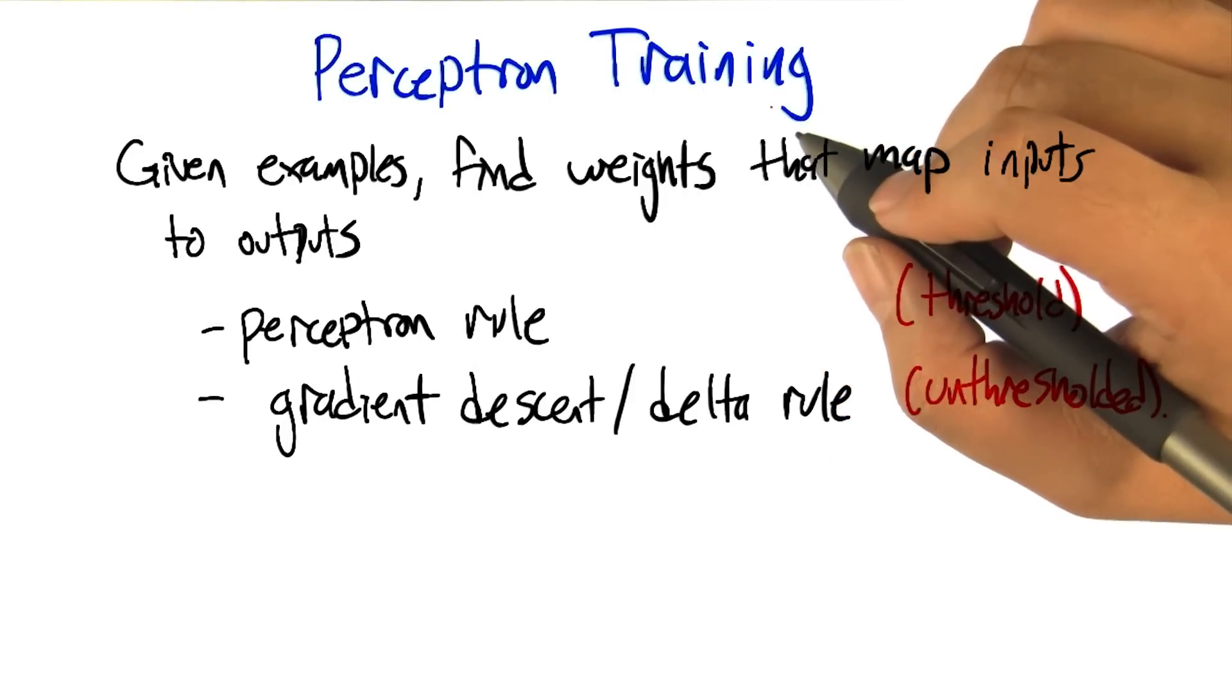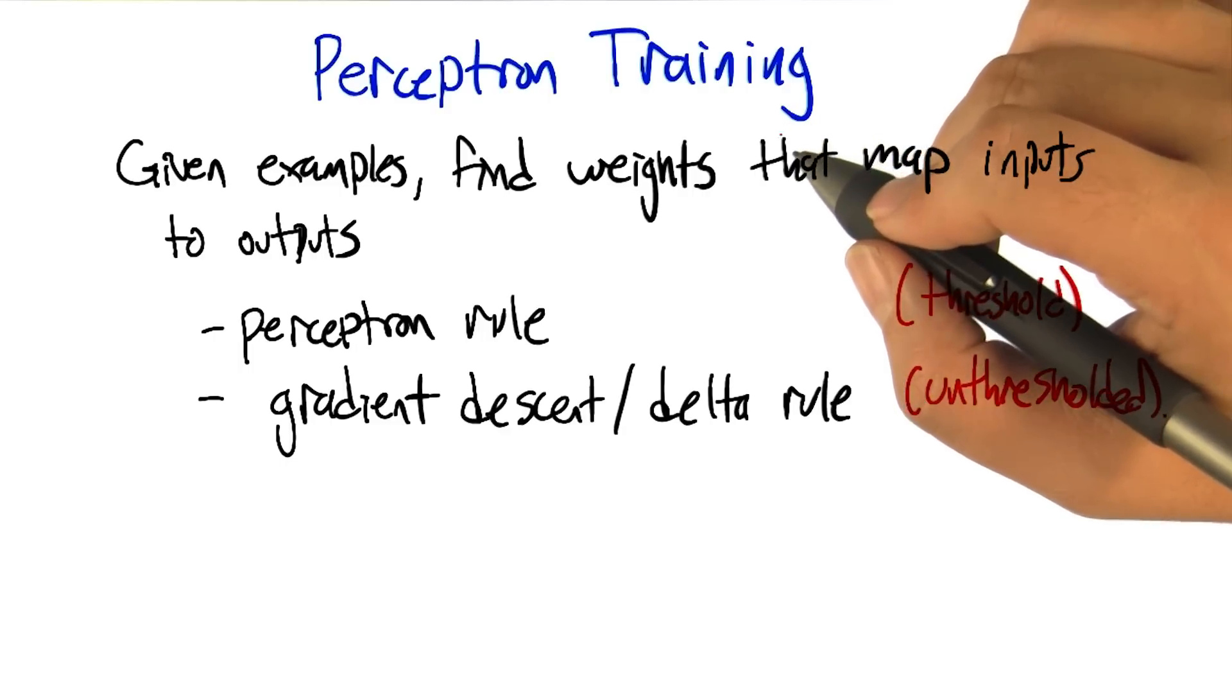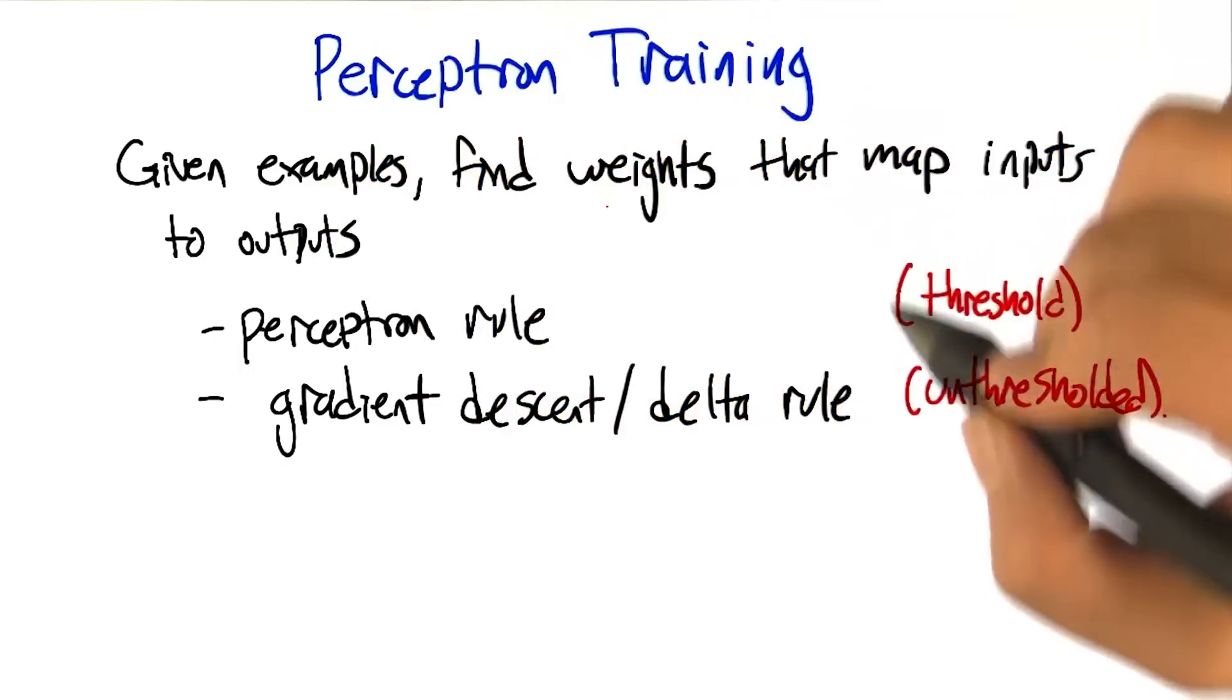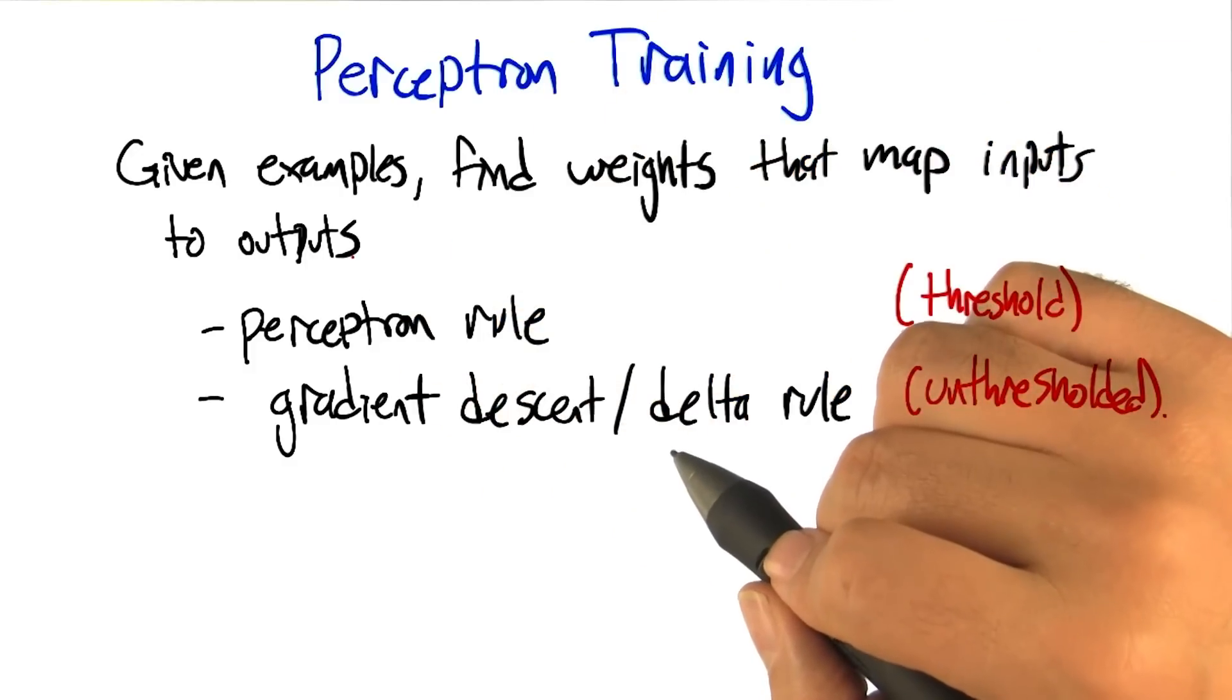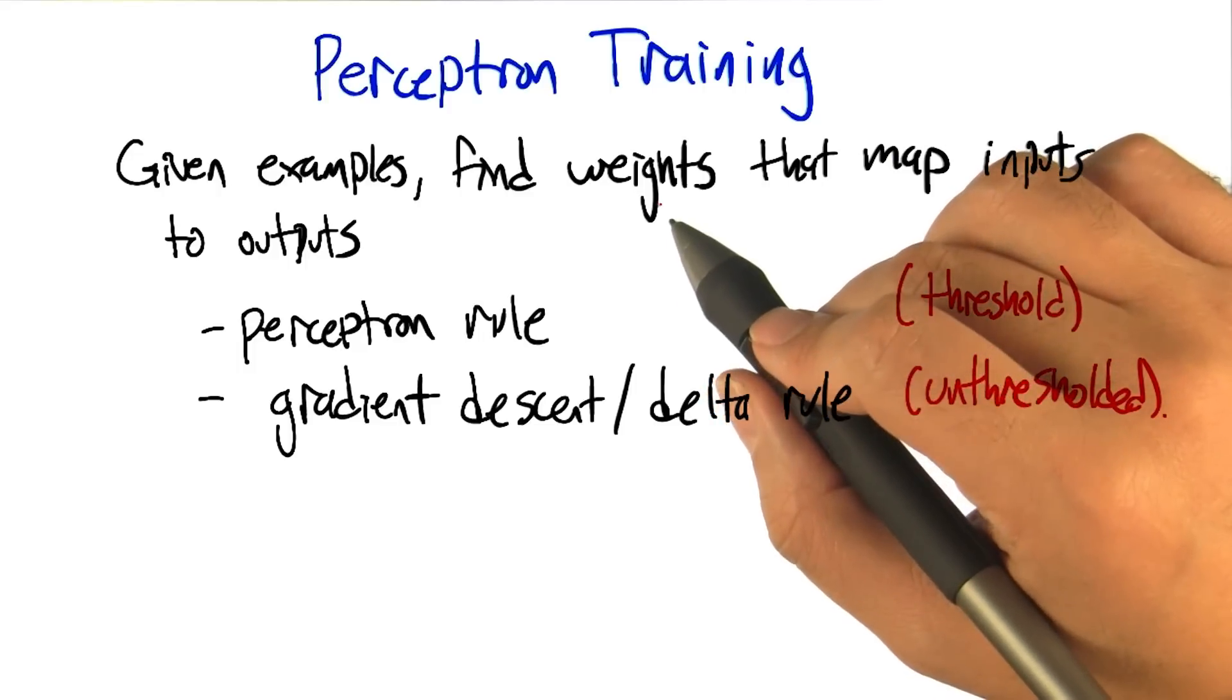All right, so in the examples up to this point, we've been setting the weights by hand to make various functions happen. And that's not really that useful in the context of machine learning. We'd really like a system that, given examples, finds weights that map the inputs to the outputs. And we're going to actually look at two different rules that have been developed for doing exactly that, figuring out what the weights ought to be from training examples.